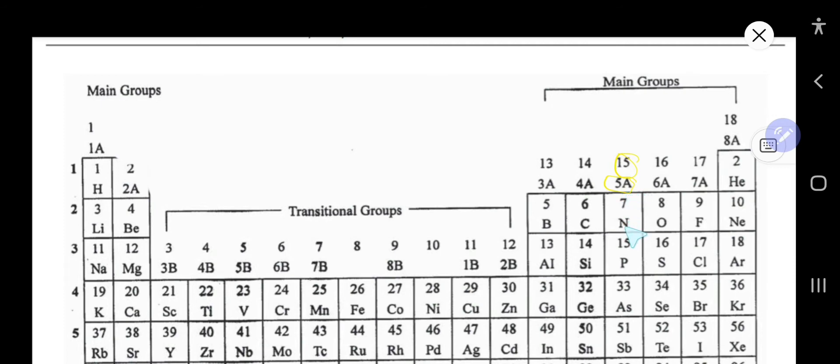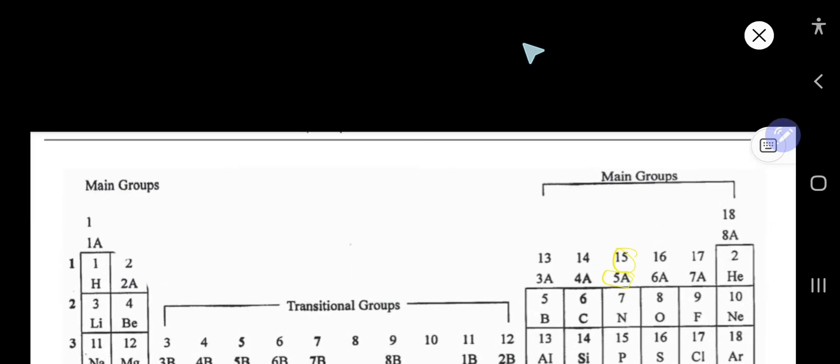It has five valence electrons. For group 15, consider the units digit, which gives you 5. For group 5A, consider the 5 and ignore the subgroup A designation. Either way, nitrogen has five valence electrons.